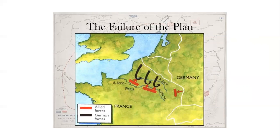Russia mobilized its troops quicker than expected. Within 10 days, the Russians had invaded Germany, which means Germany had to switch troops away from Western Europe to hold up the Russian invasion.